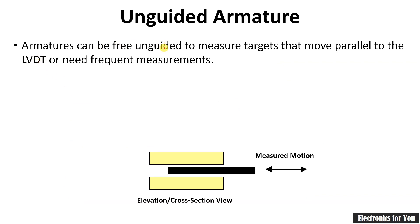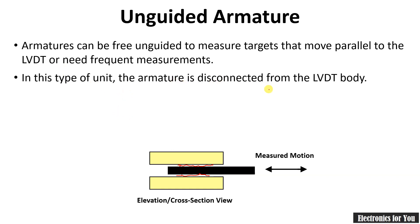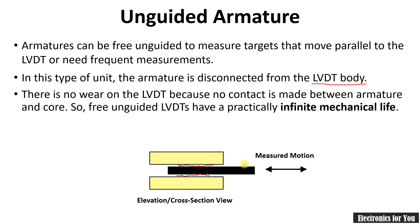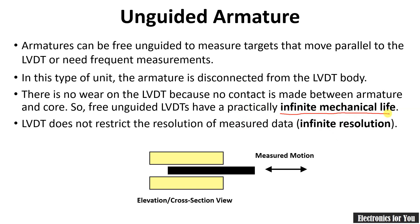The armature can be used to measure targets that move parallel to the LVDT. In this type, the armature can be disconnected from the LVDT body. Since there is no contact of the core with the winding or remaining body parts, there is no wear and tear, giving it infinite mechanical life. It also does not restrict resolution, so it has infinite resolution.